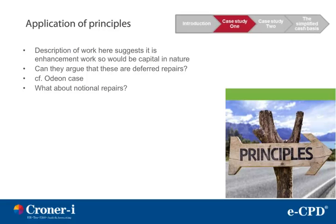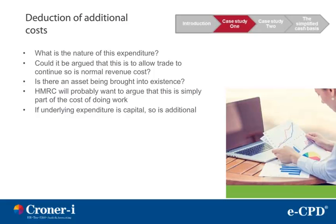What about notional repairs? We also need to consider in this case the deduction of additional costs. What is the nature of this expenditure? Could it be argued that this is to allow trade to continue, so is a normal revenue cost? Is there an asset being brought into existence? You should not underestimate the importance of expenditure bringing into existence an asset of an enduring nature. HMRC will probably want to argue that this is simply part of the cost of doing work. If the underlying expenditure is capital, so is the additional expenditure.